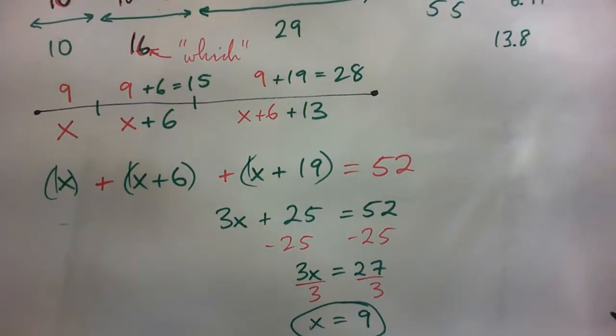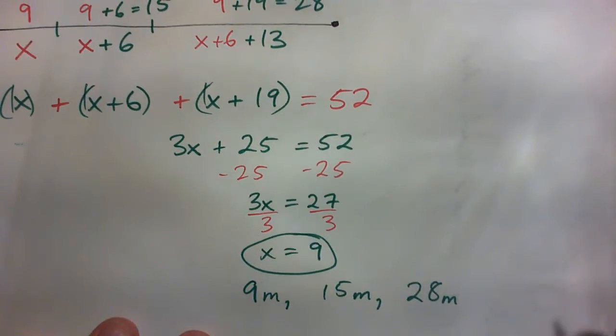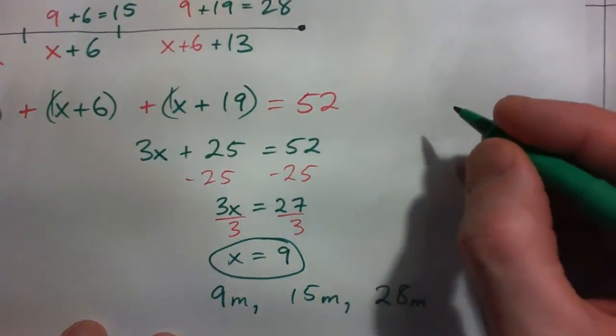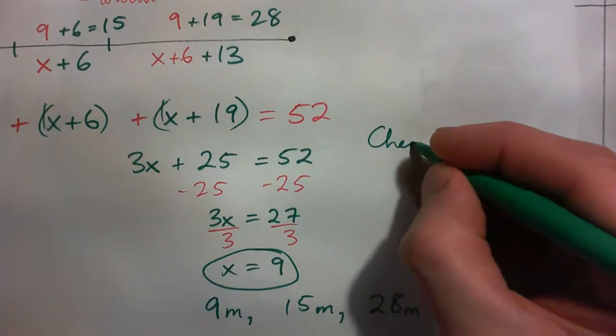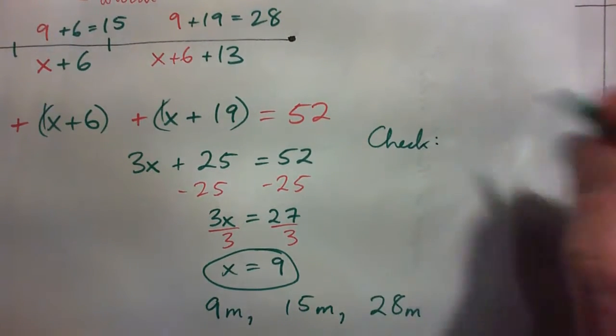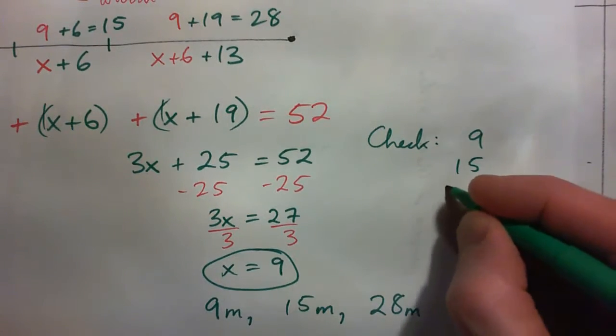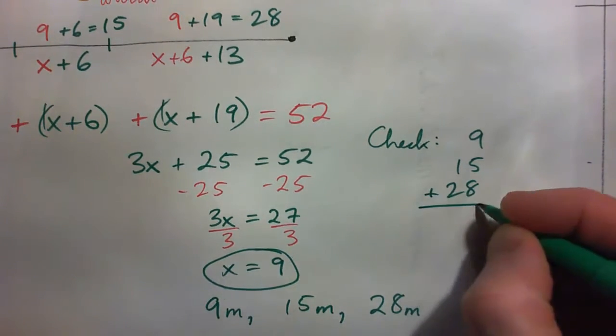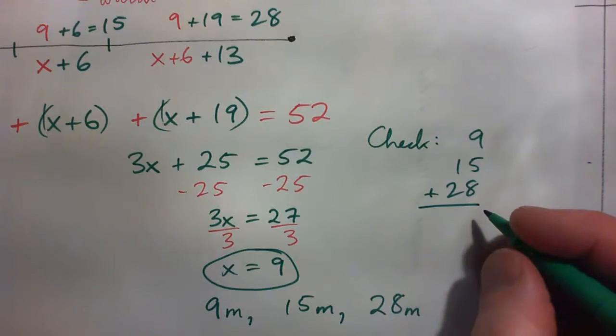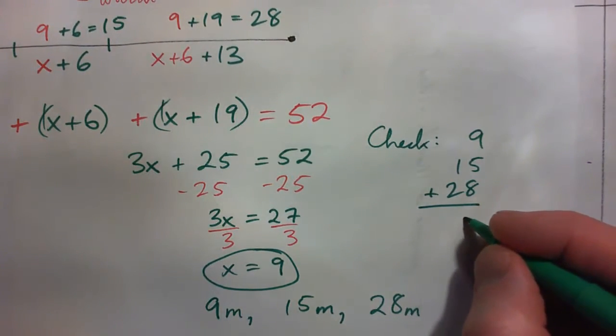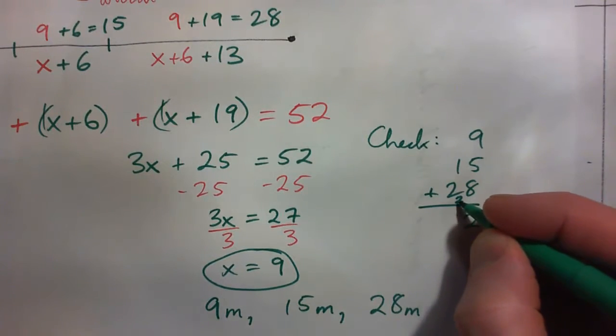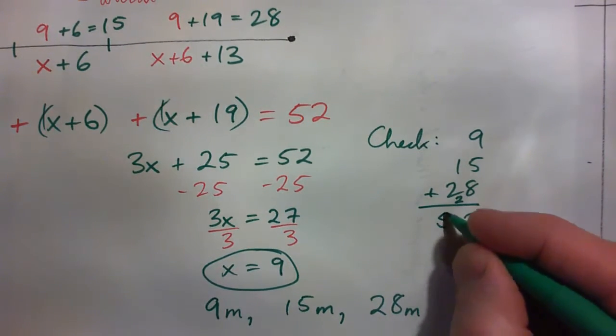And how are we going to check this? How about I add them all up: 9, 15, 28. That's 52. Done.